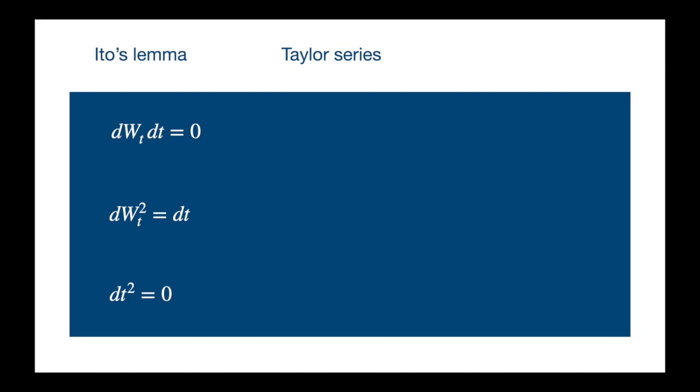The trick does work, but there will always be someone asking the question why is dW times dt equal to 0, or why is dt squared equal to 0.